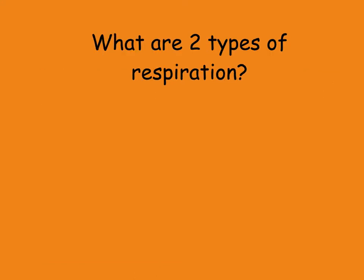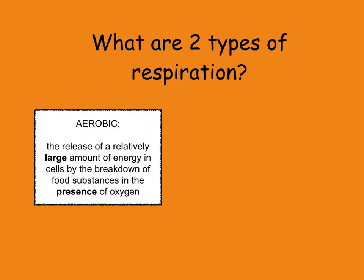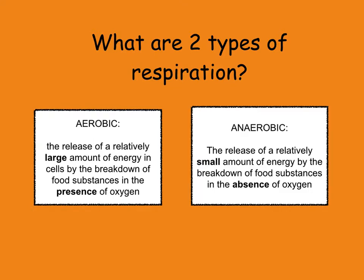Finally, there are two types of respiration: aerobic and anaerobic. Aerobic respiration requires oxygen and releases a large amount of energy in the cells by the breakdown of food substances in the presence of oxygen. Anaerobic respiration releases a relatively small amount of energy by the breakdown of food substances in the absence of oxygen. Key words: aerobic requires oxygen and releases a large amount of energy; anaerobic does not require oxygen and releases a small amount of energy.